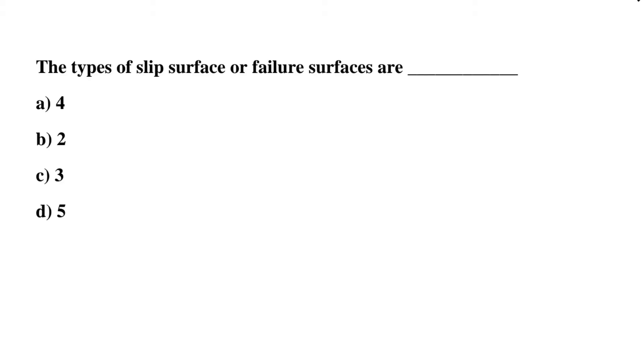Next question: the types of slip surface or failure surface are how many? Option A: 4, Option B: 2, Option C: 3, Option D: 5. The correct answer is Option C, 3.